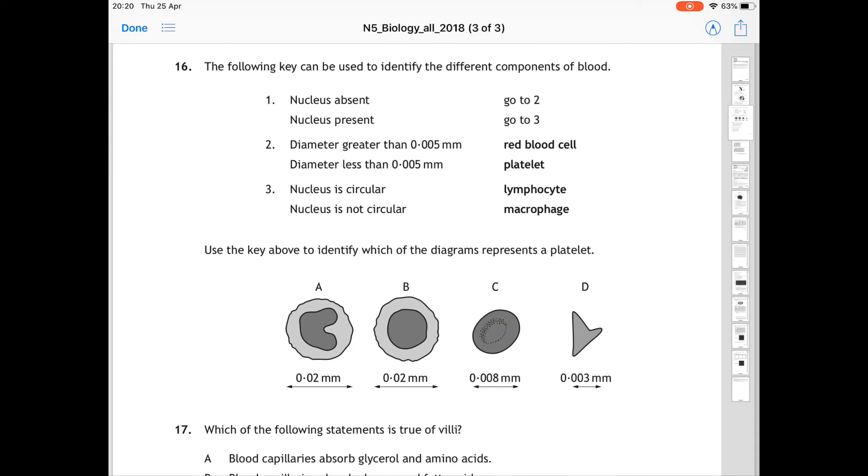Question 16 is about the blood as well, but it is giving you an identification key instead. It asks you the following key can be used to identify the different components of blood. Use the key above to identify which of the diagrams, A, B, C or D, represents a platelet. So if you look at platelet in the actual key and compare it to the diagram and work your way back, you should find that D must be a platelet. Its diameter is less than 0.005 millimeters and also the nucleus is absent. So that's a good way of going through it in reverse to find that D is the platelet.